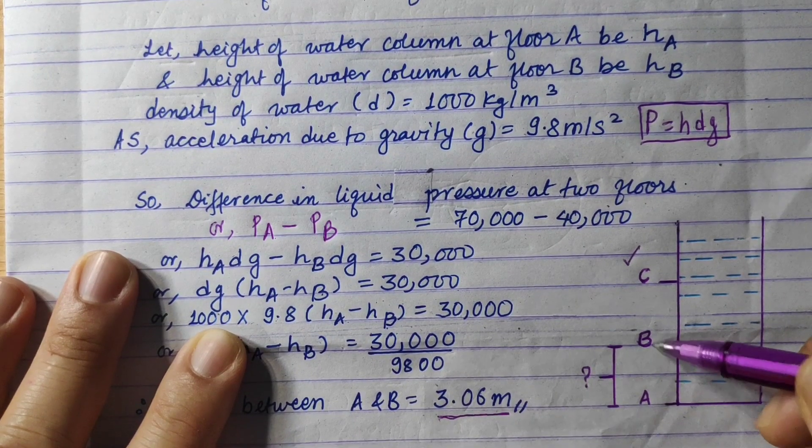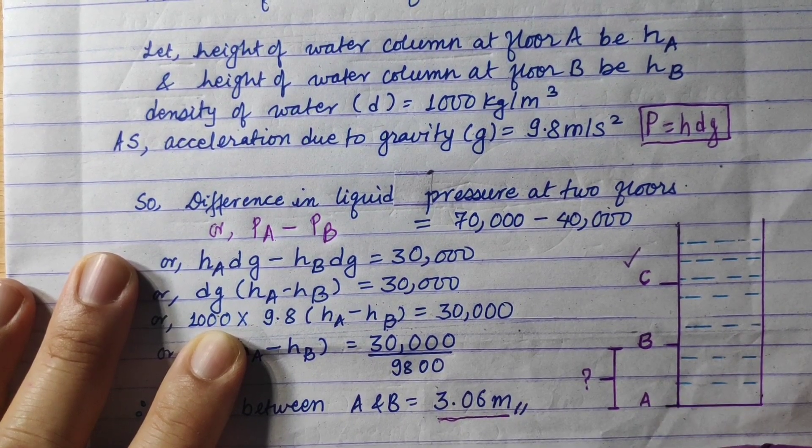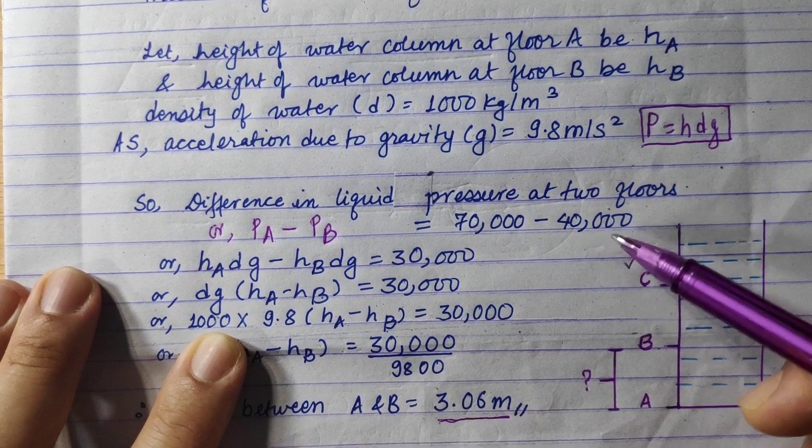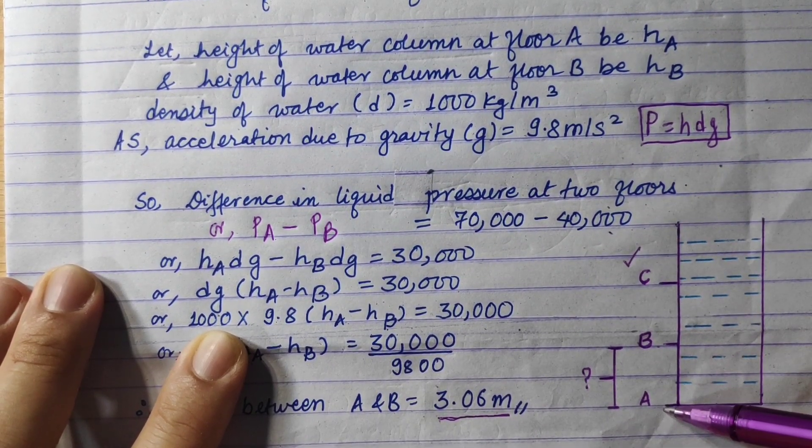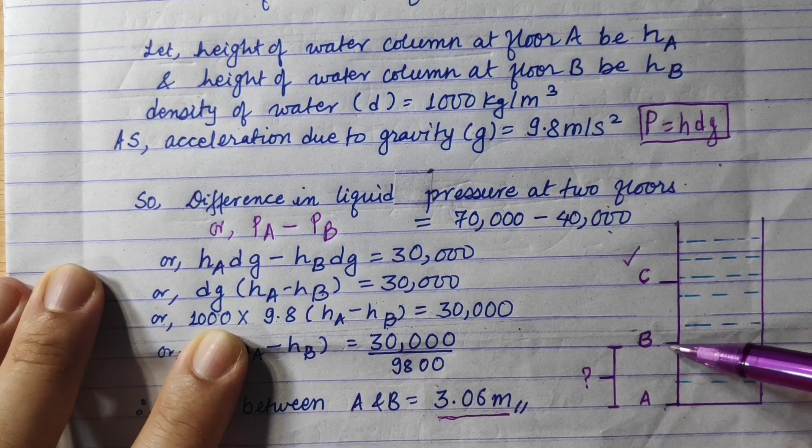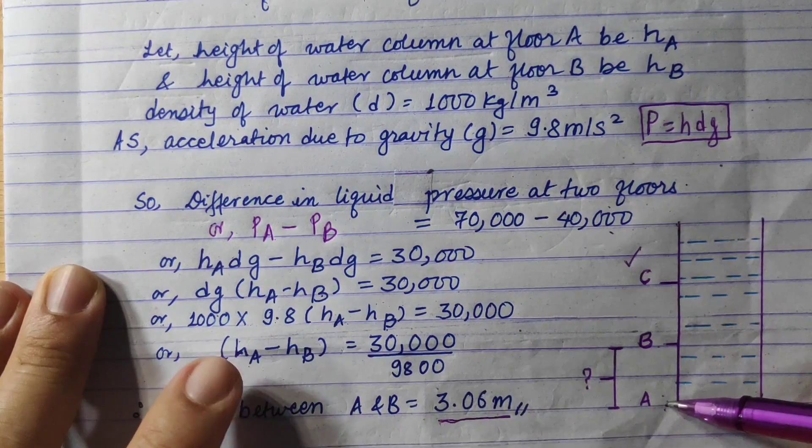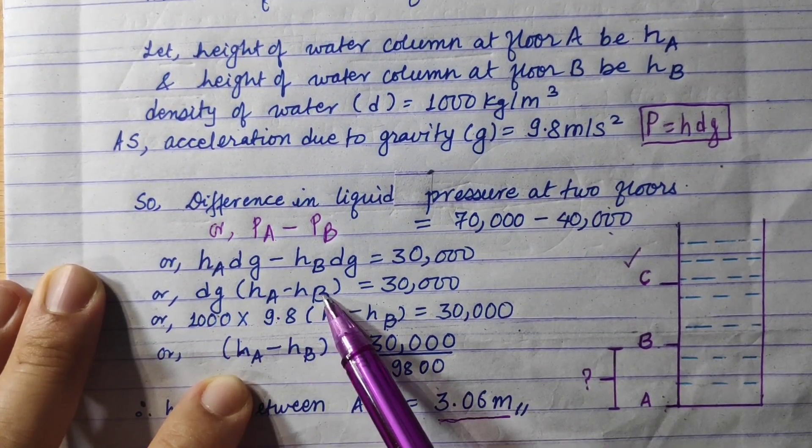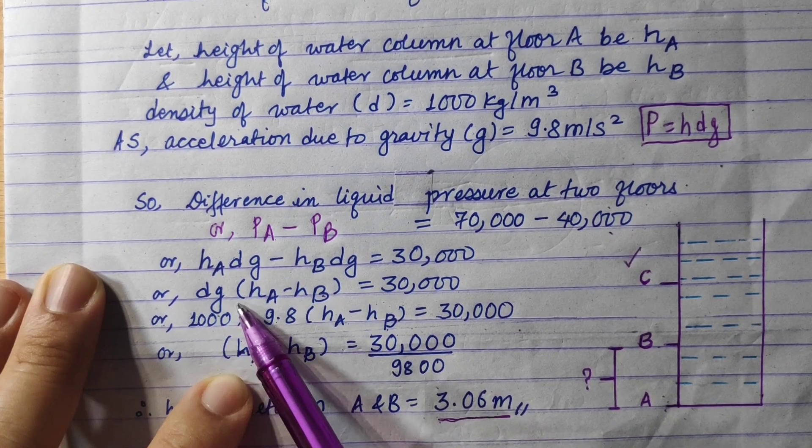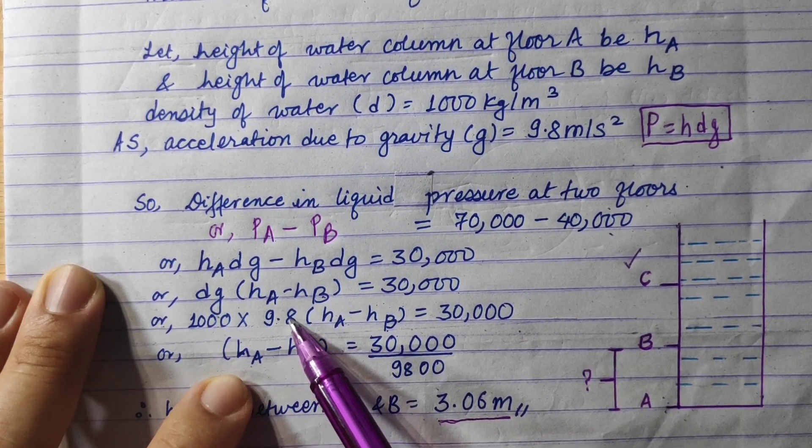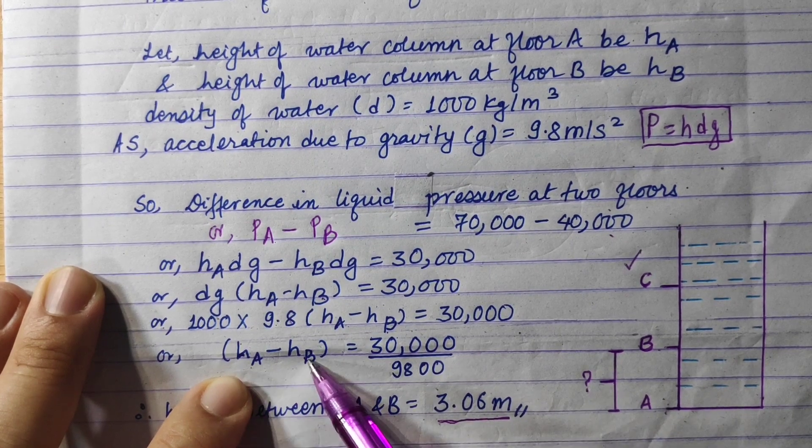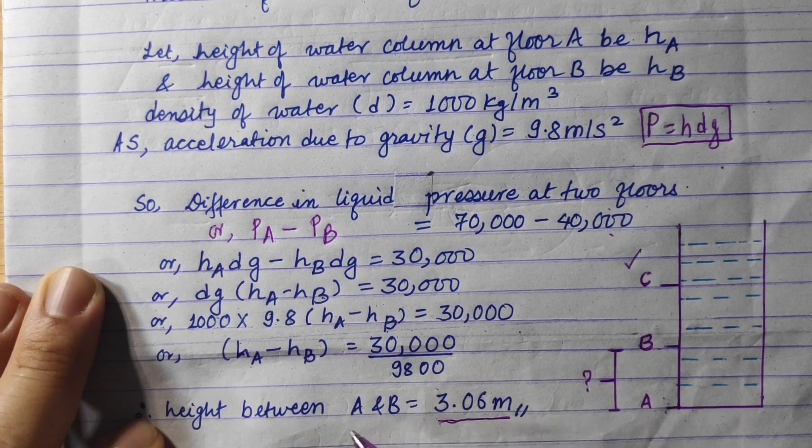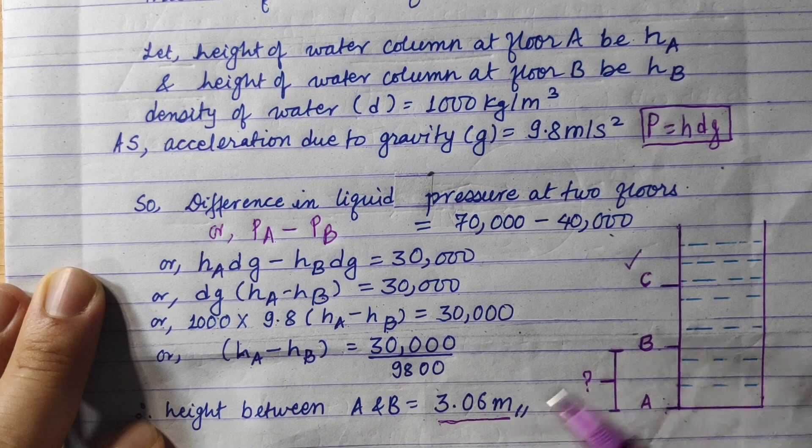For the second question, we found the height between B and A. We found the height between these two floors. Liquid pressure at B is 40,000, liquid pressure at A is 70,000. We took the difference of these two floors' liquid pressures. We replaced the values in the formula, took dg as common, and calculated the remaining values. We found that the height difference between floors A and B is 3.06 meter.